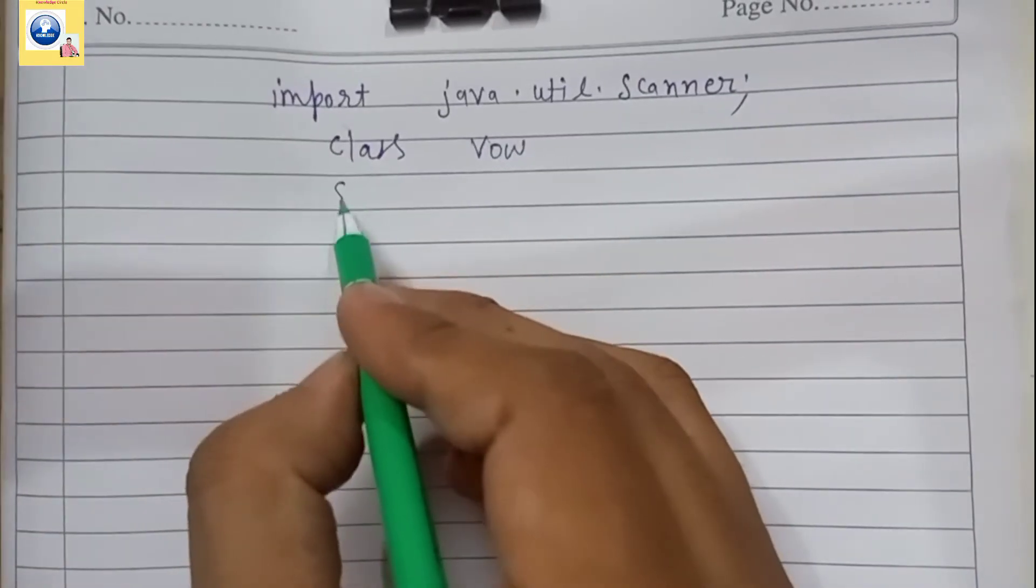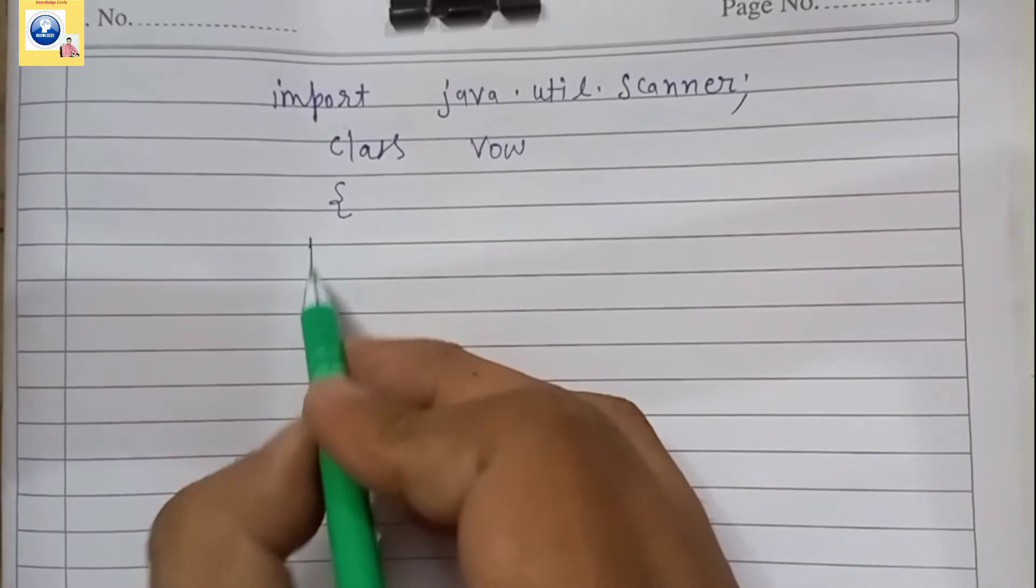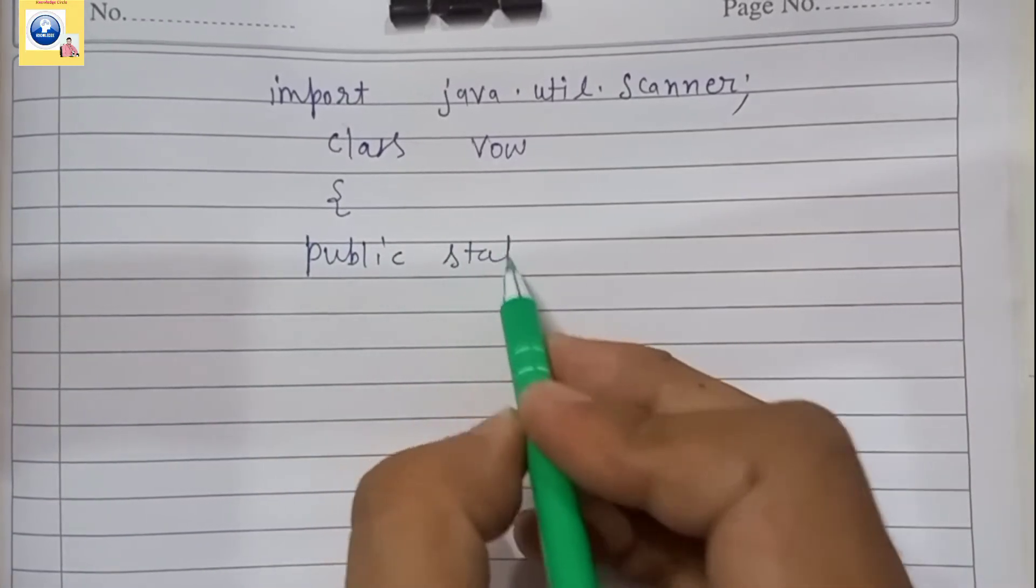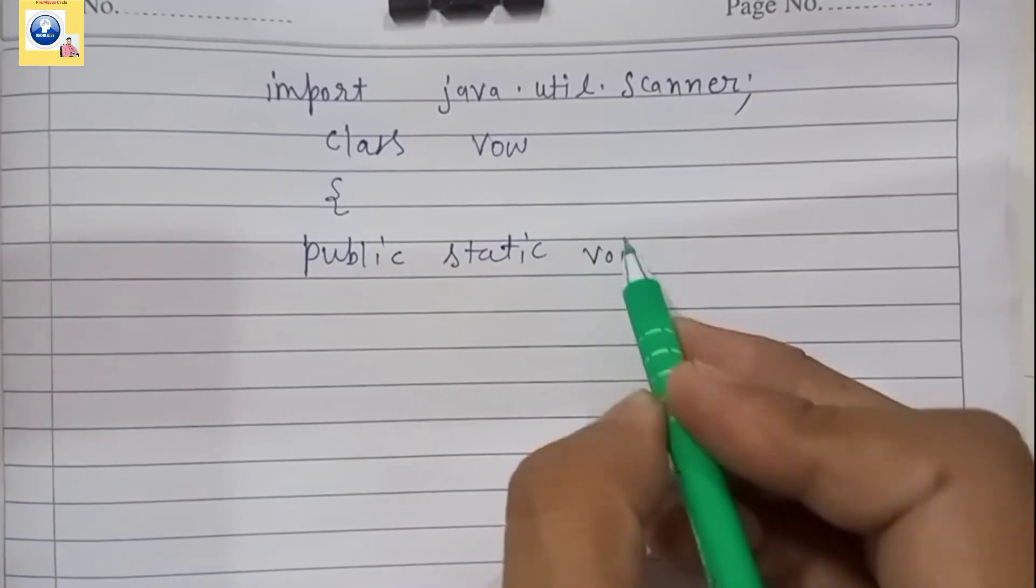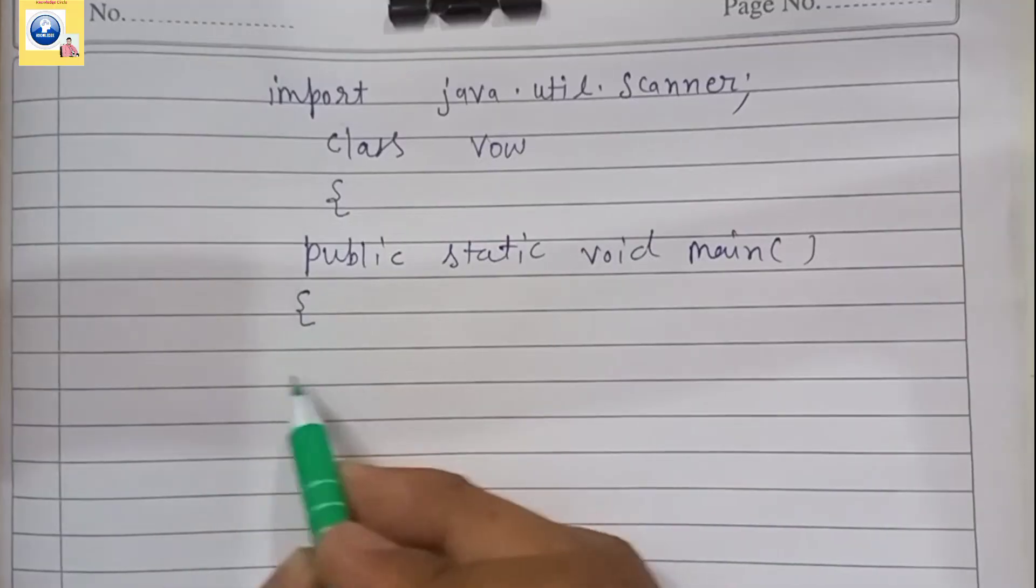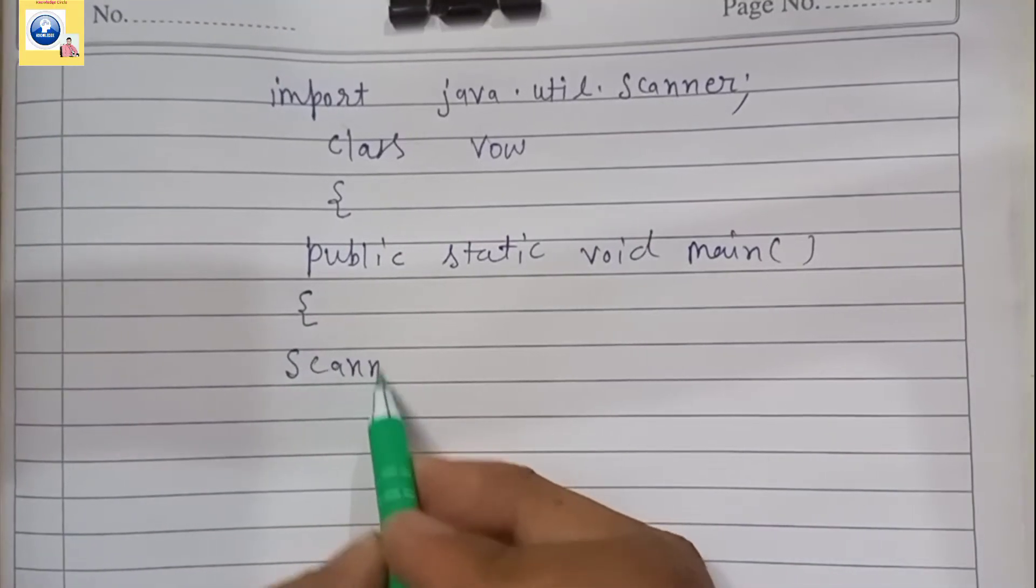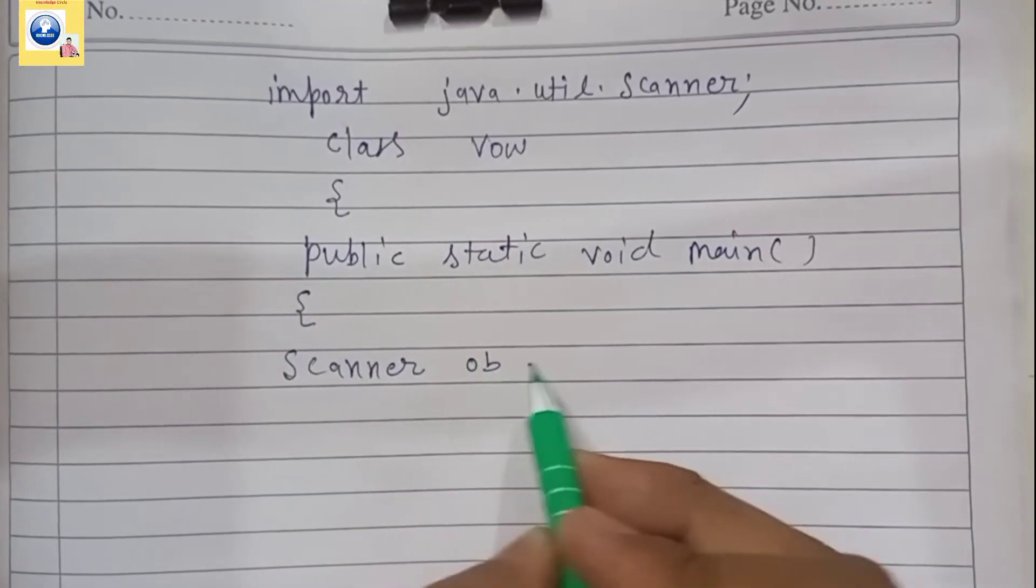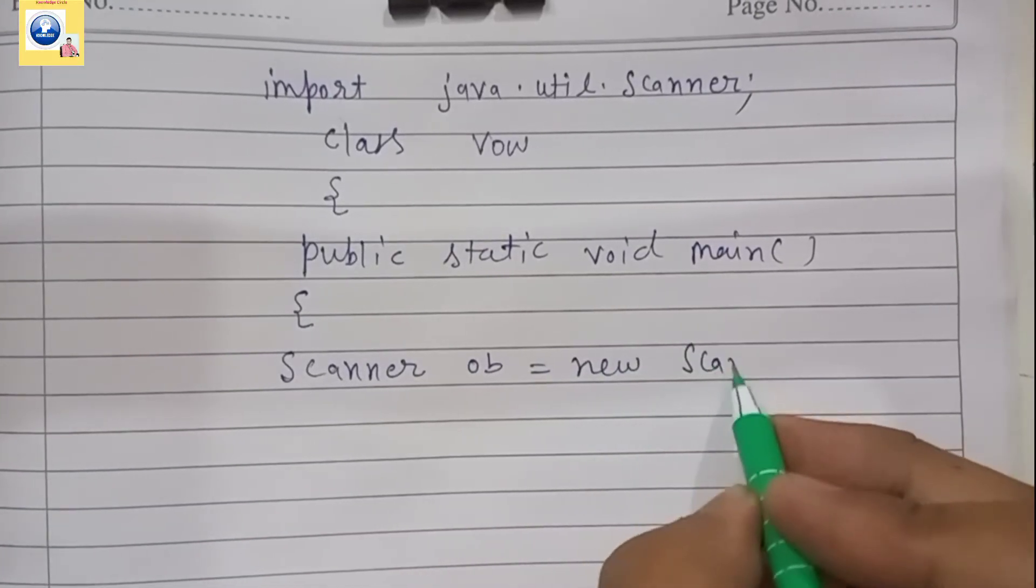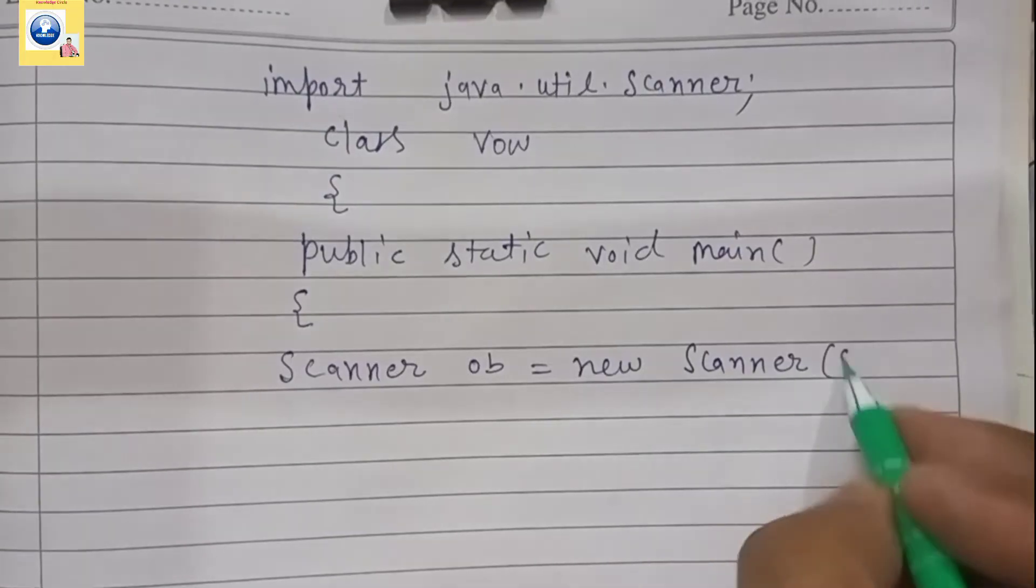Then after we'll create main function, that is public static void main. Then after we'll create the object of Scanner class. So we'll write here Scanner, any object name can be given, new Scanner, object is created.